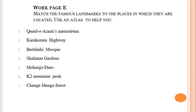Our next question is Work Page E. Work Page E is: match the famous landmarks to the places in which they are located — use an atlas to help you. We are given seven famous landmarks and we have to find out where they are located. Number one is Quaid-e-Azam's mausoleum — it is located in Karachi, Sindh. Our next option is the Karakoram Highway, which is located in Khyber Pakhtunkhwa.